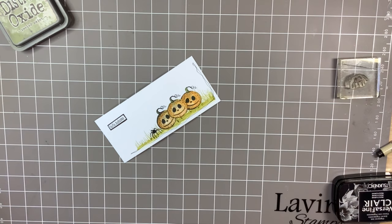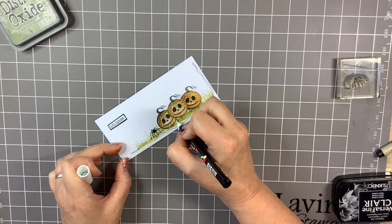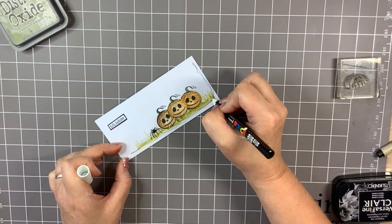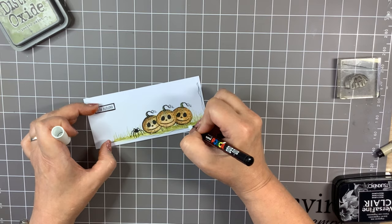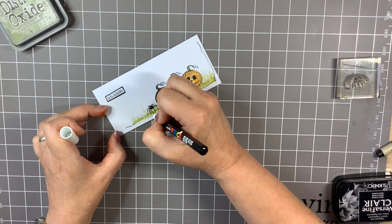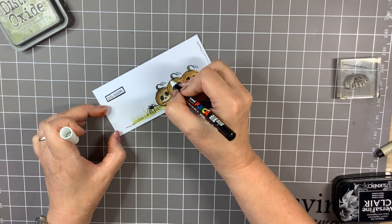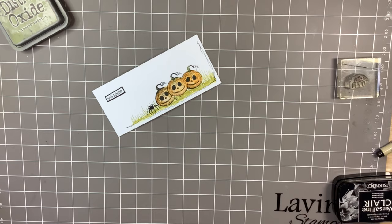And a white Posca pen. Add some little dotty areas, like some little daisies on the grass. I don't know why I always put three in a row. But there you go. Add a few flicks of white onto where I've added the black blades of grass with the black pen. Add a highlight to my spider and to my pumpkins.